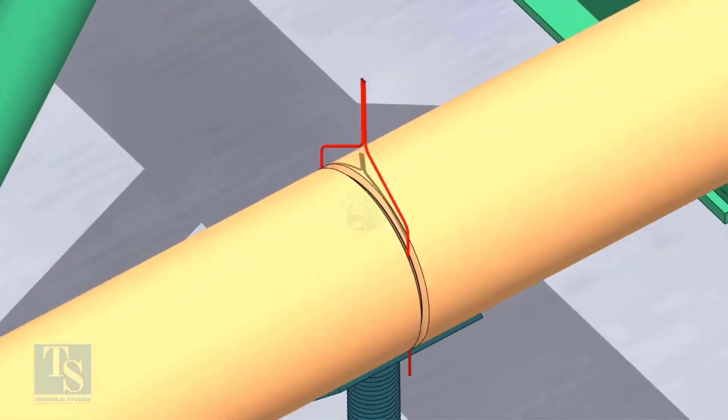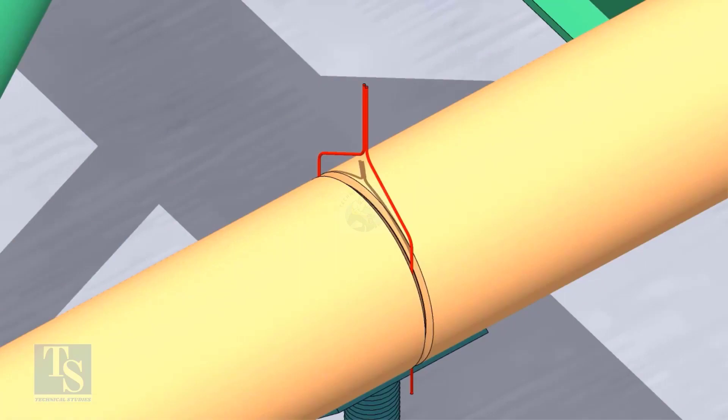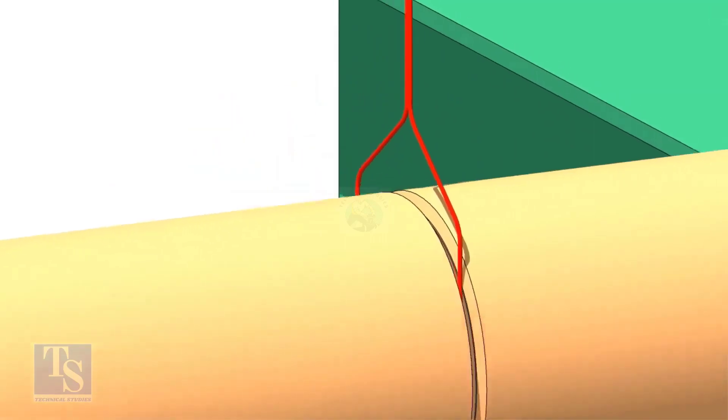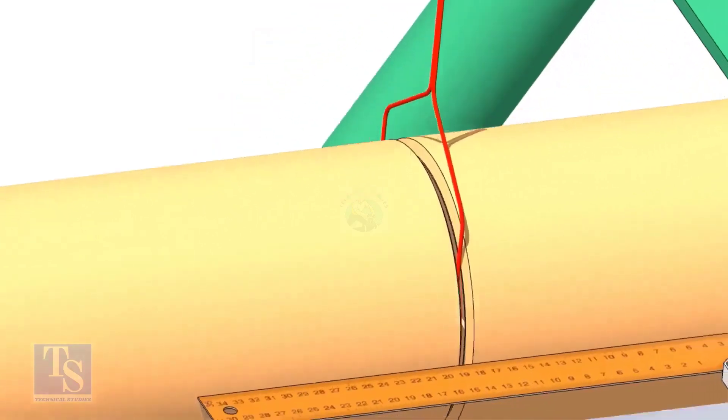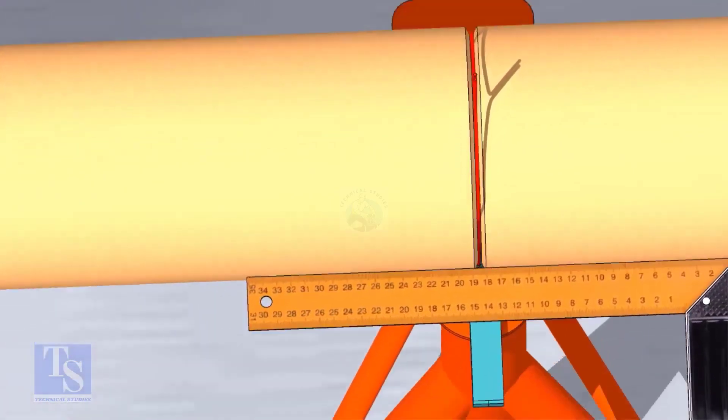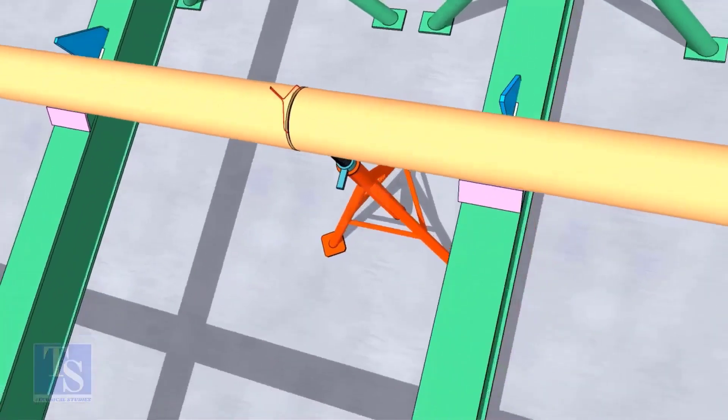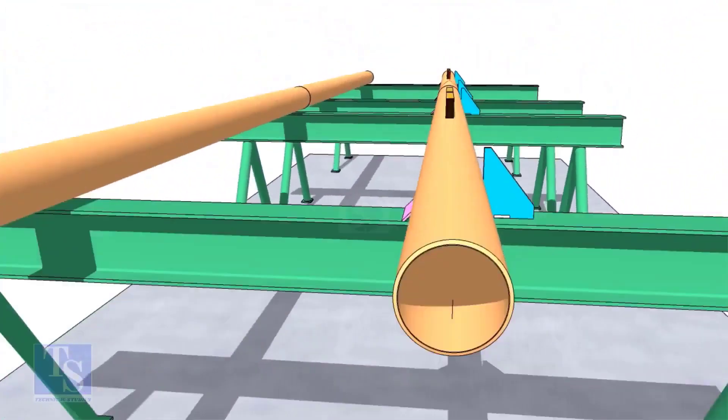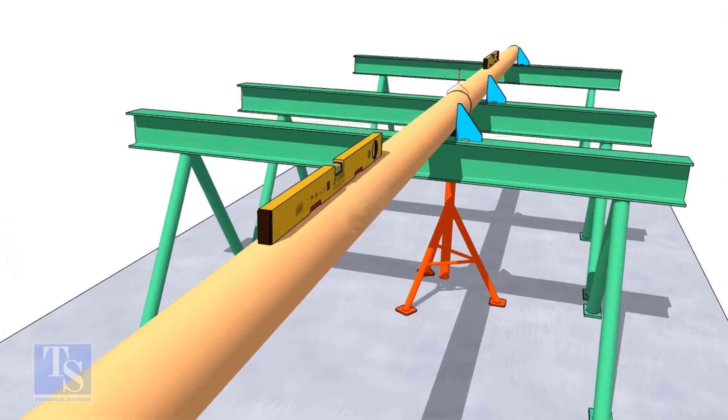Put the gap rod between the joint. Check if there is any overlap. Check the straightness of the pipes by looking from one end of the pipes. This is the best way to check the straightness.